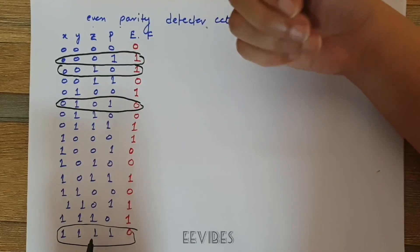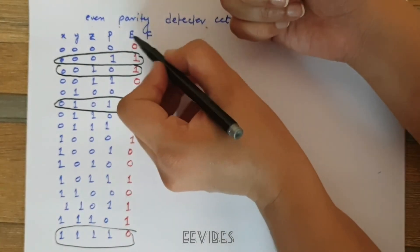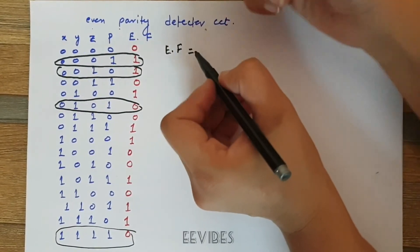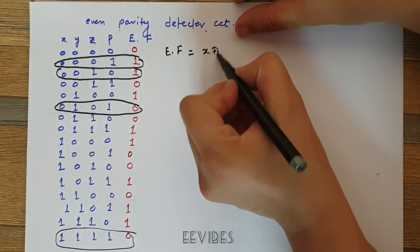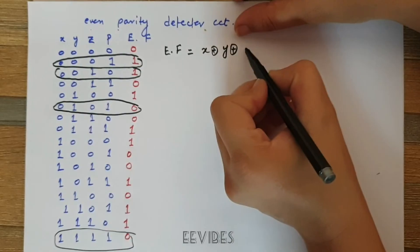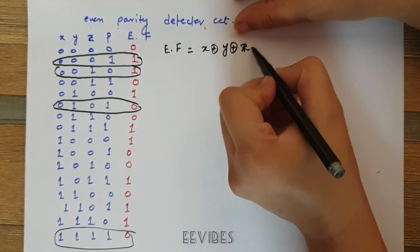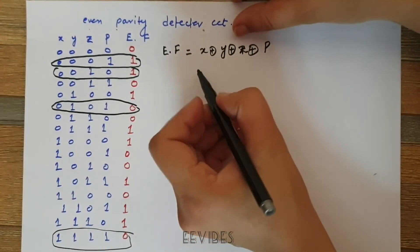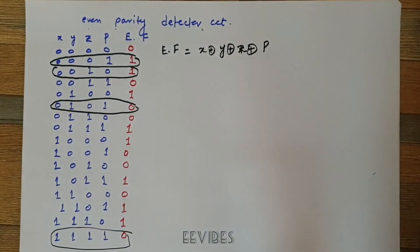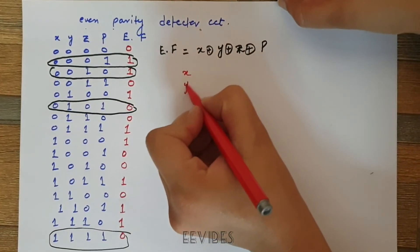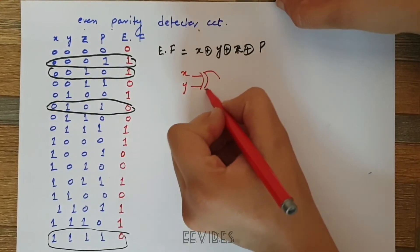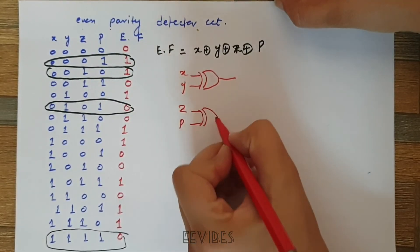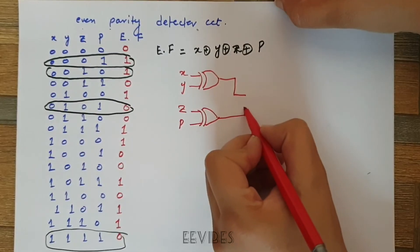At the receiving side, the error function can again be implemented using the XOR of X, Y, Z, and the parity bit P. To draw the logical diagram: first take the XOR of X and Y, then take the XOR of Z and P, and finally XOR those two results together.